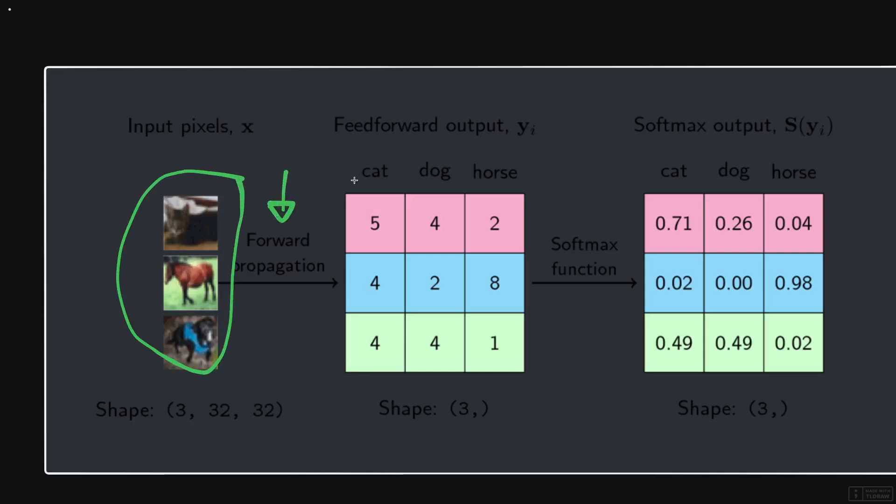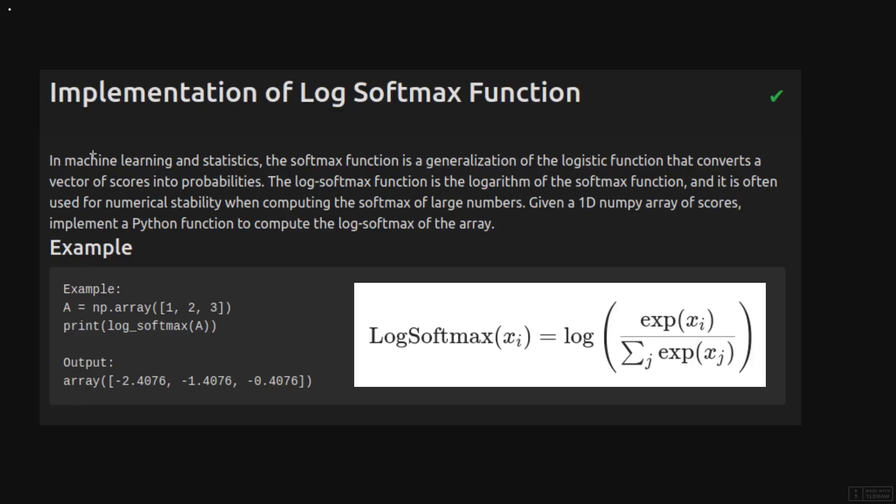How softmax works is that you have a bunch of data points going through a neural network, and if you have classes, this is the output of your network. You have 5, 4, 2 - you should choose the 5 because it's the biggest one. But it's much better to have probabilities, or as we're going to see afterwards, log probabilities.